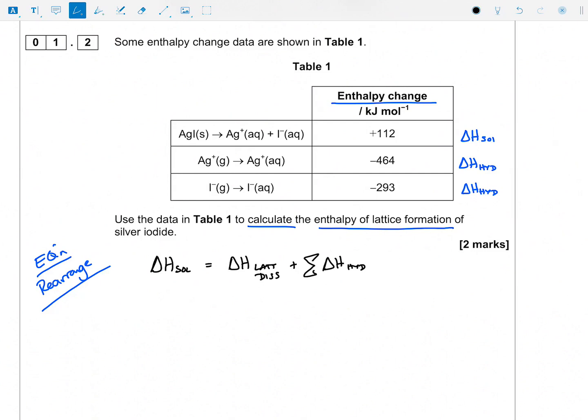So delta H sol, that is plus 112, equals this delta H lattice dissociation. These are negative numbers, so I'm going to go minus 464 and minus 293. Now in AgI, there's only one of each ion, so I don't need to multiply those up. So what I'm going to do here is invert this number.